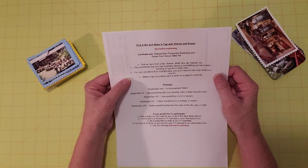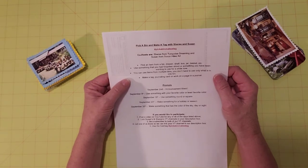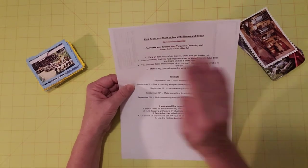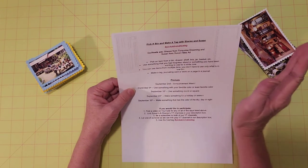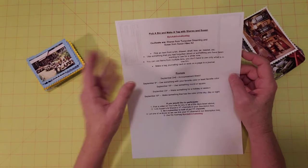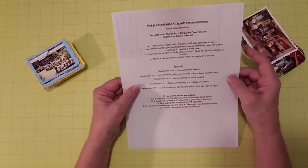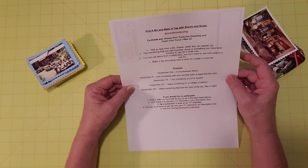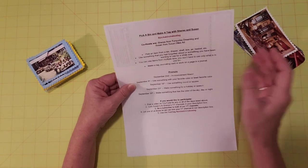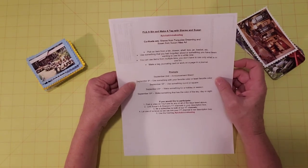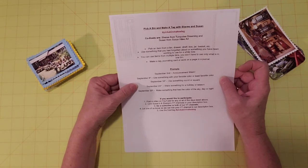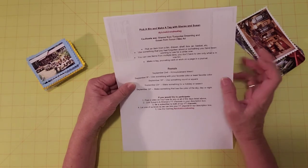You can use items from multiple bins. You don't have to use only what is in one bin. Make a tag, drawing card, or work on a page in a journal. Just because it says hashtag pick a bin make a tag, doesn't mean you have to make a tag. You can do whatever you want. This is the announcement week and then we're going to have four Fridays in September. This coming next Friday will be use something with your favorite color or least favorite color.